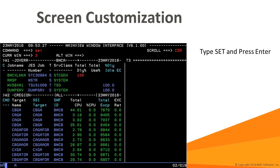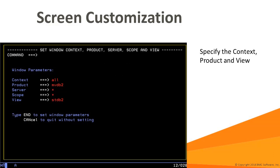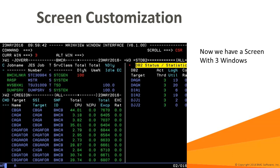Now let's populate the window with data using the set command. Type set on the command line and press enter, then specify the product, context, and view you wish to display. In this example, we're going to show the DB2 status view, STDB2, in MainView for DB2, and we want to see all the DB2 subsystems. After specifying the input values, press PF3. Our third window is now populated.